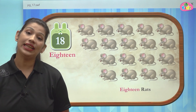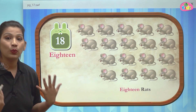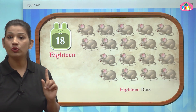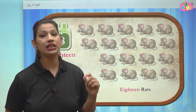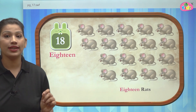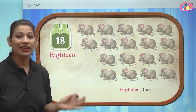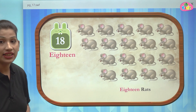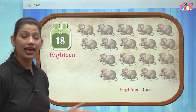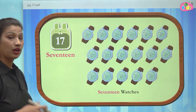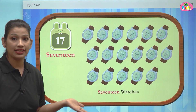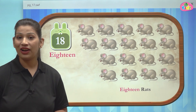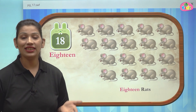Let us know the number name of 18. 18 is also very easy to write — you just have to write 8 and teen, but we don't use a double T. We use E-I-G-H-T-E-E-N: eighteen. In today's session we learnt about two numbers: 17, which is seven plus teen, and number 18 — eighteen. These are two digit numbers which come after 16: 16, 17, 18.